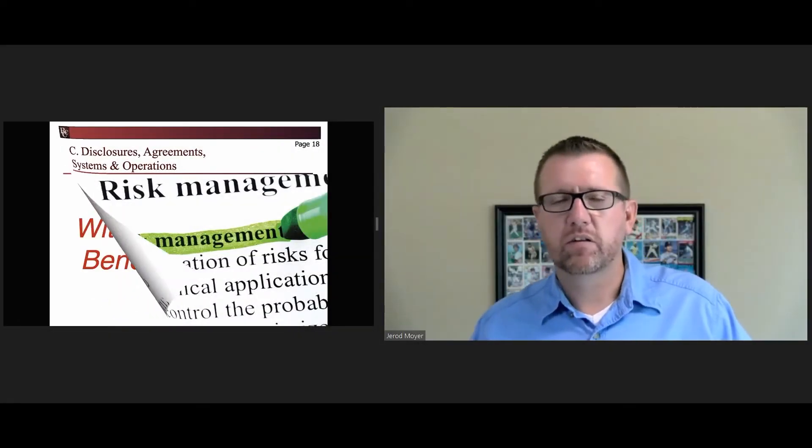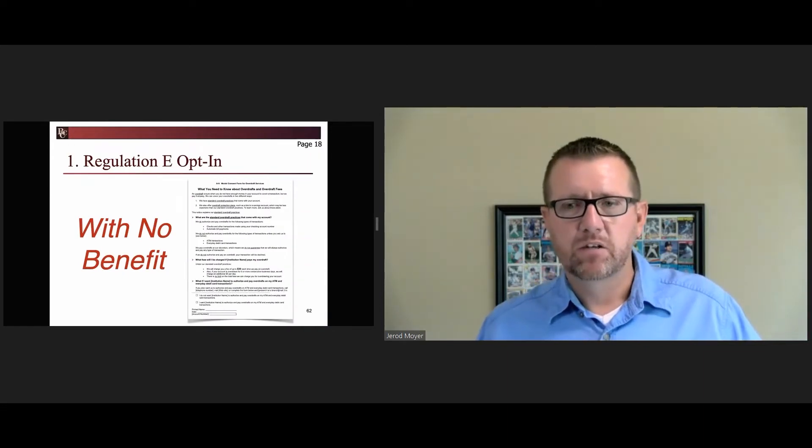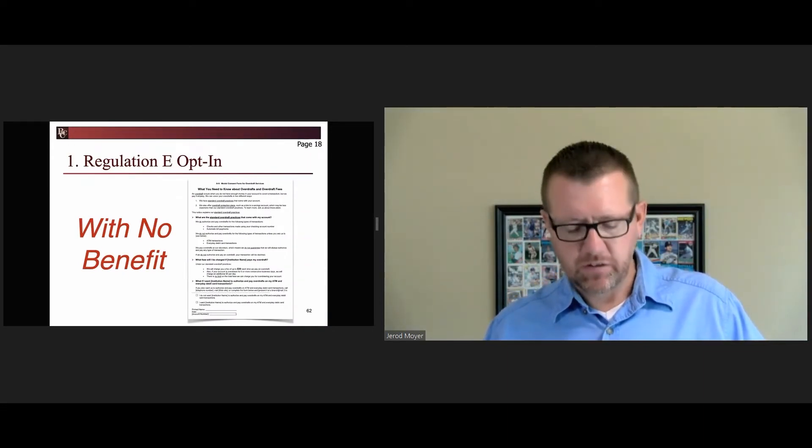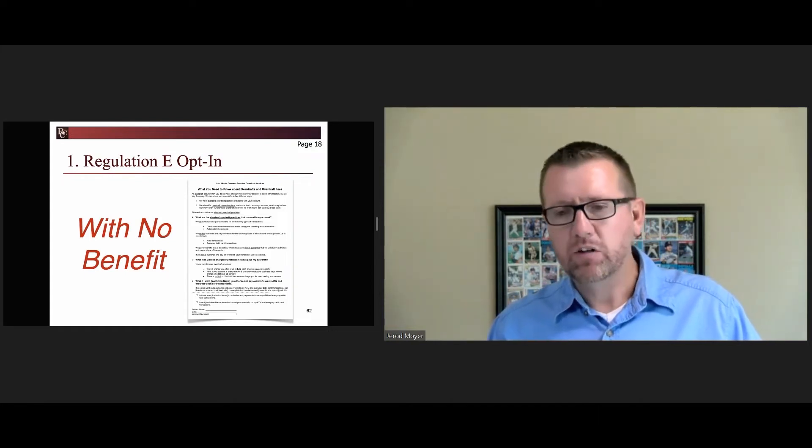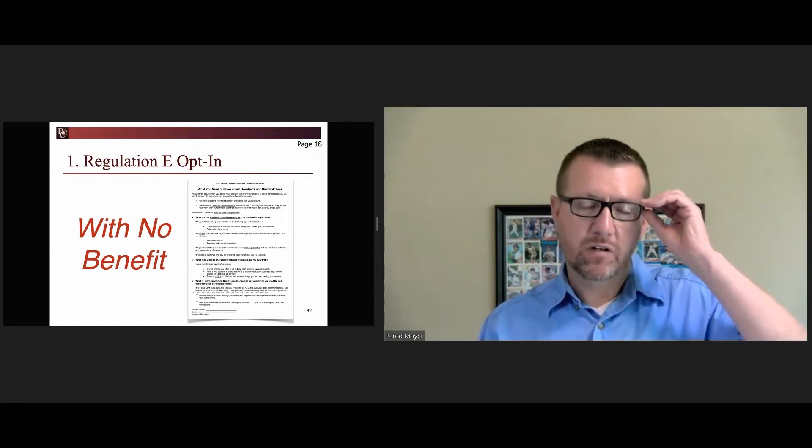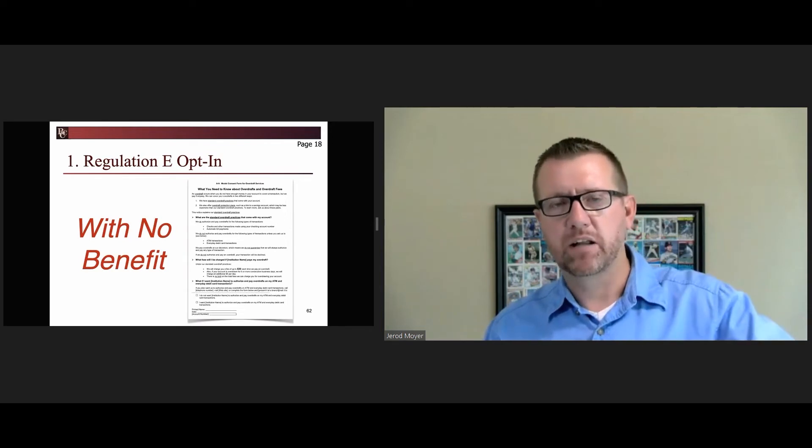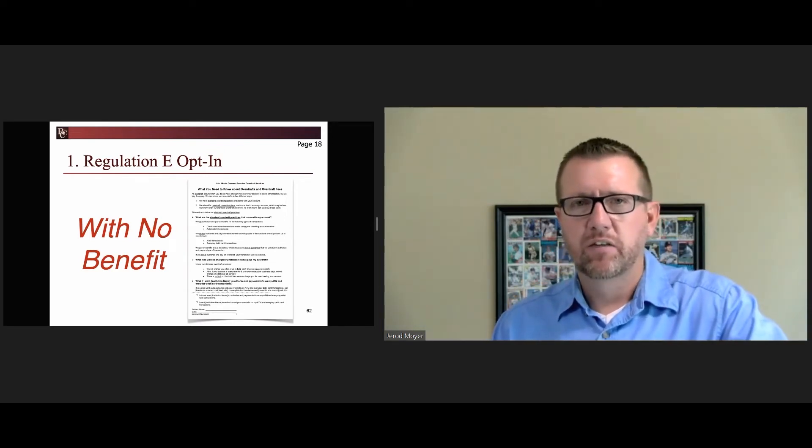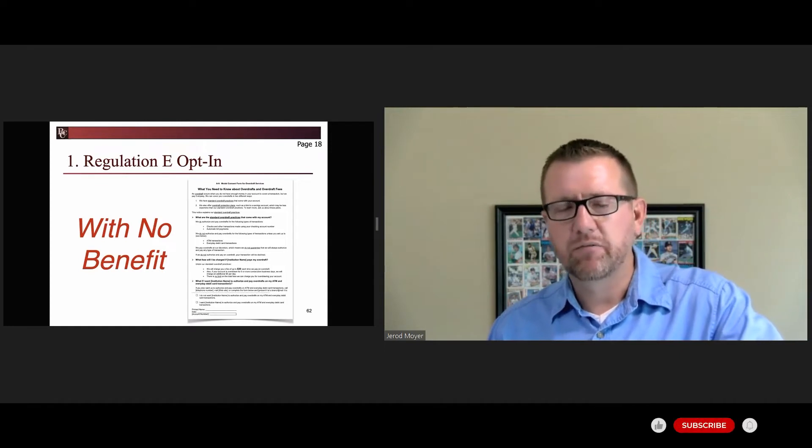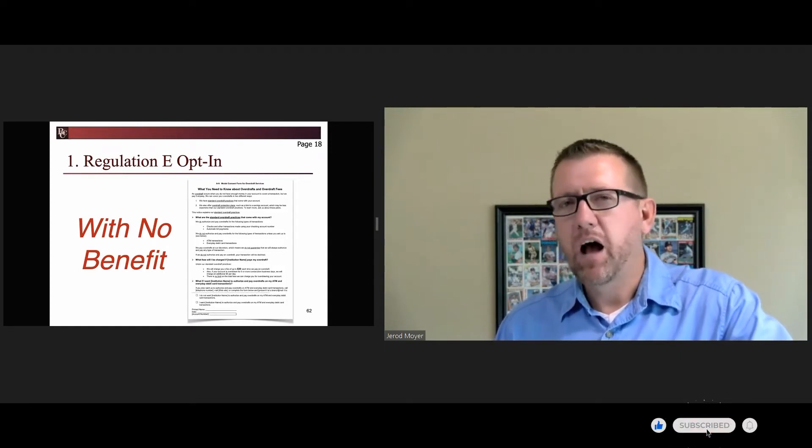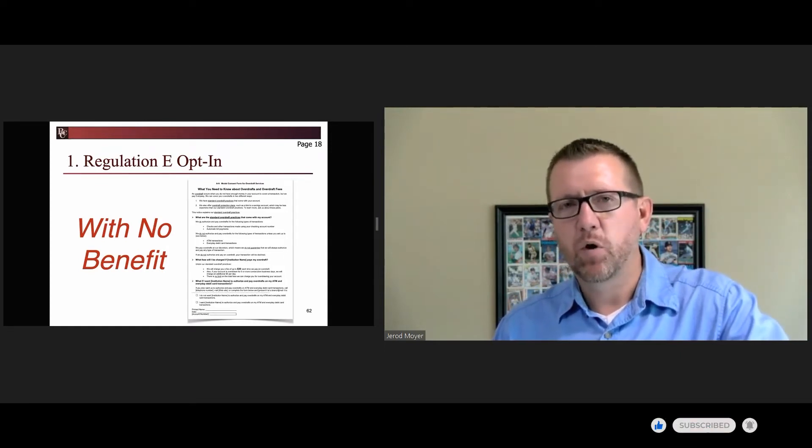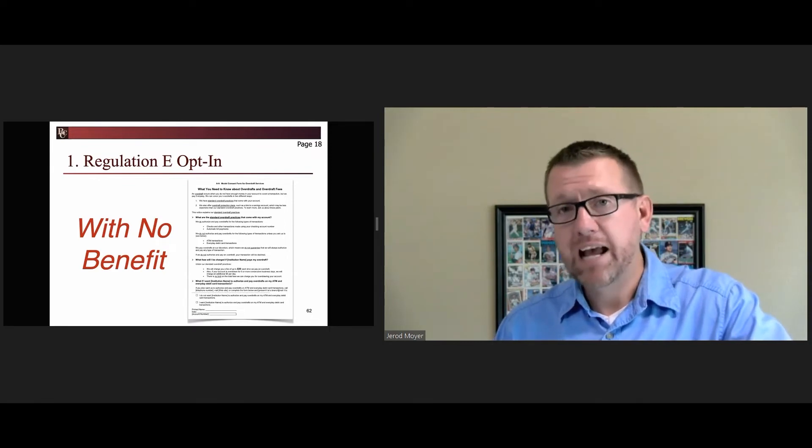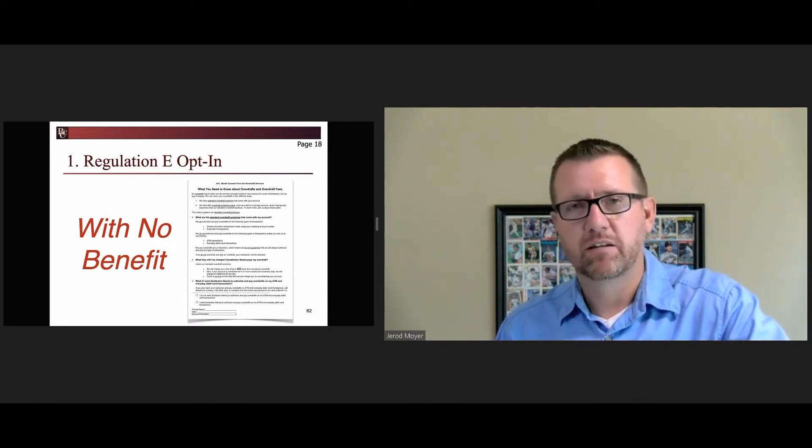We're going to start with the Regulation E opt-in as it relates to disclosures and agreements. Letter C1, small letter A says make certain that if you're offering an opt-in under Reg E for one-time debit and ATM transactions, that the consumer gets a benefit for opting in. Remember, they're opting in so that you can charge them an overdraft fee that you can't charge them if they don't opt in. So what's their benefit?